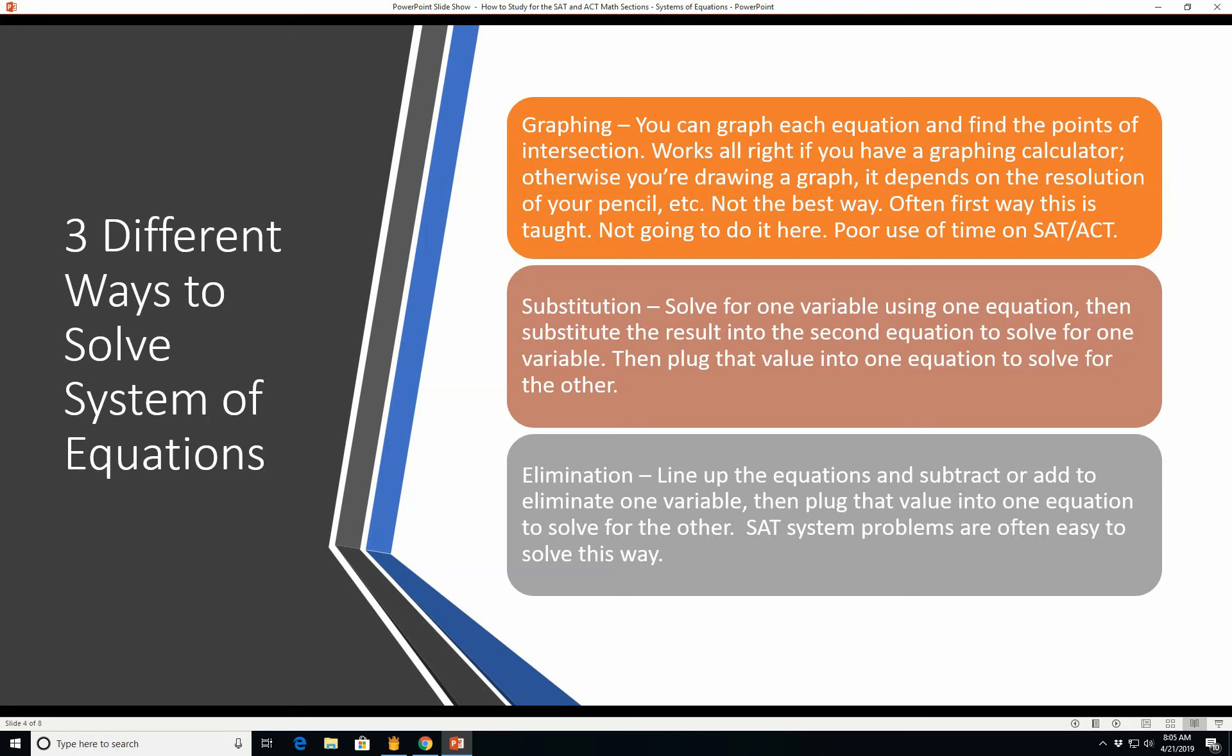Substitution is where you solve for one variable using one equation. You get x in terms of y and then you substitute the results in the second equation so you have all one variable. Elimination is lining up the equation and subtracting or adding to eliminate one variable then plugging that value into one equation to solve for the other. SAT system problems are often very easy to solve this way especially if there are more than two equations. Just line them up and the values will drop out.